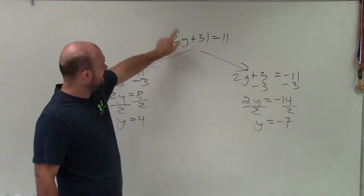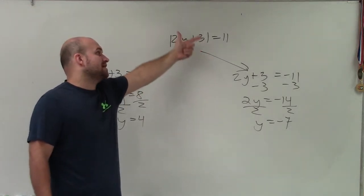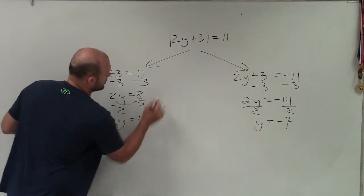So if I plug 4 in for y, I have 2 times 4, which is 8. 8 plus 3 is positive 11. Absolute value of 11 is 11. So this solution works.